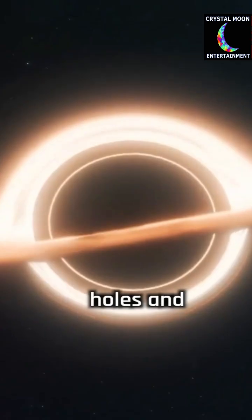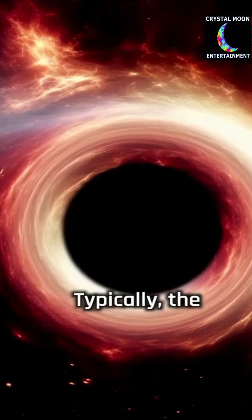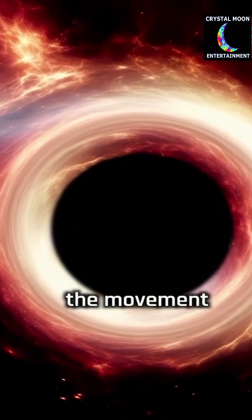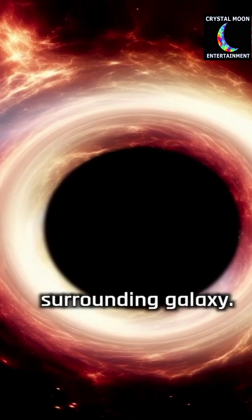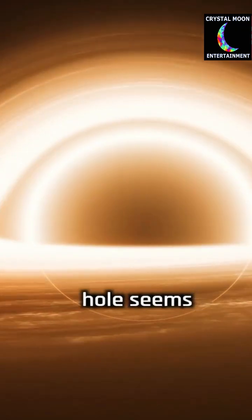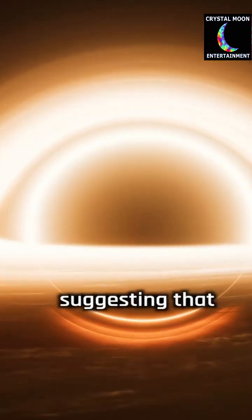Astronomers discovered a black hole 36 billion times the mass of the Sun residing at the heart of a cosmic horseshoe, a gravitationally lensed system of galaxies located approximately 5.5 billion light-years away.